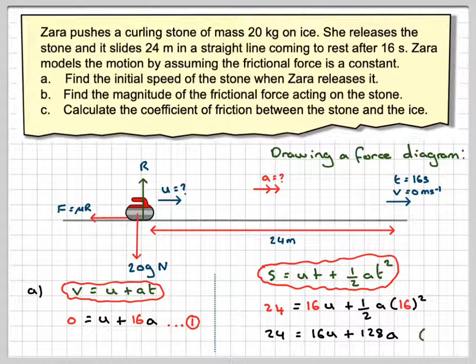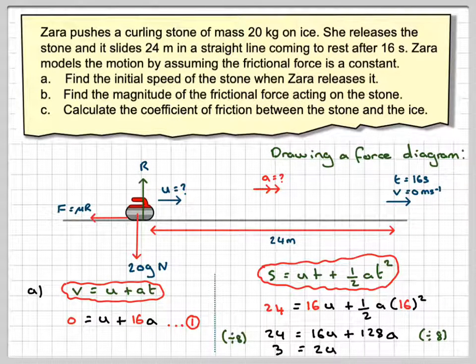And we notice that 8 goes into each of those things. 24, 3 times, 16, 2 times. So we get 2u and 128, 16 times. So we get 16a there. We'll call that equation 2.